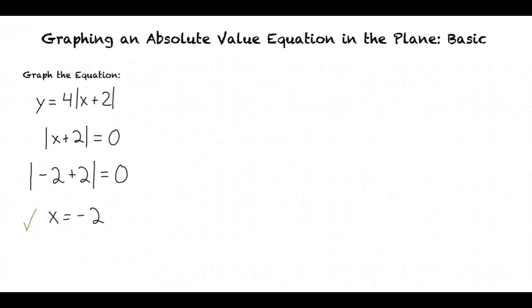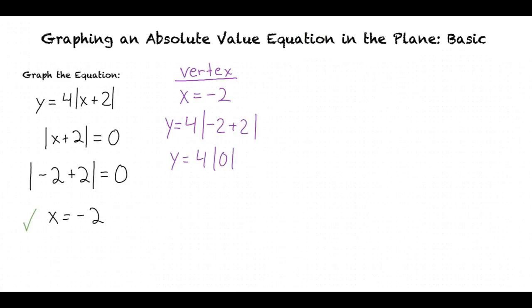We can now plug this value into our equation to find the vertex. This gives us y equals 4 times the absolute value of negative 2 plus 2, which results in y equals 4 times the absolute value of 0. 4 times 0 gives us 0. This means that our vertex occurs at negative 2 comma 0.